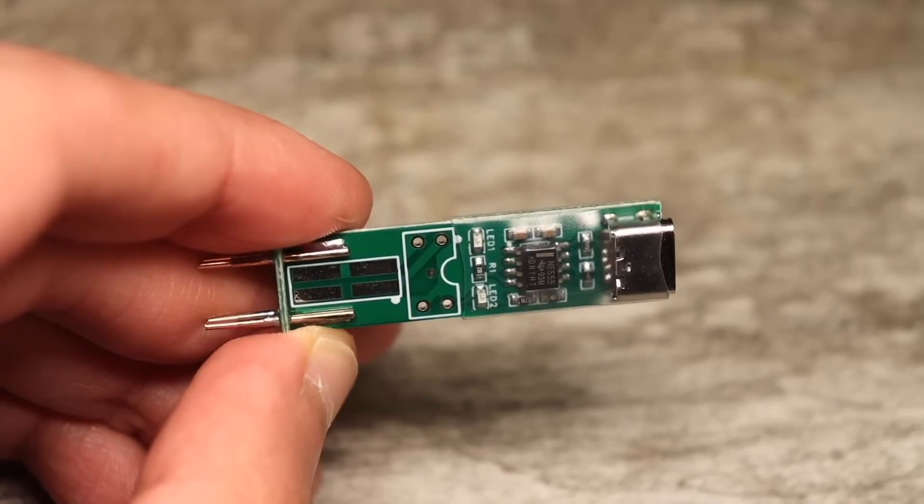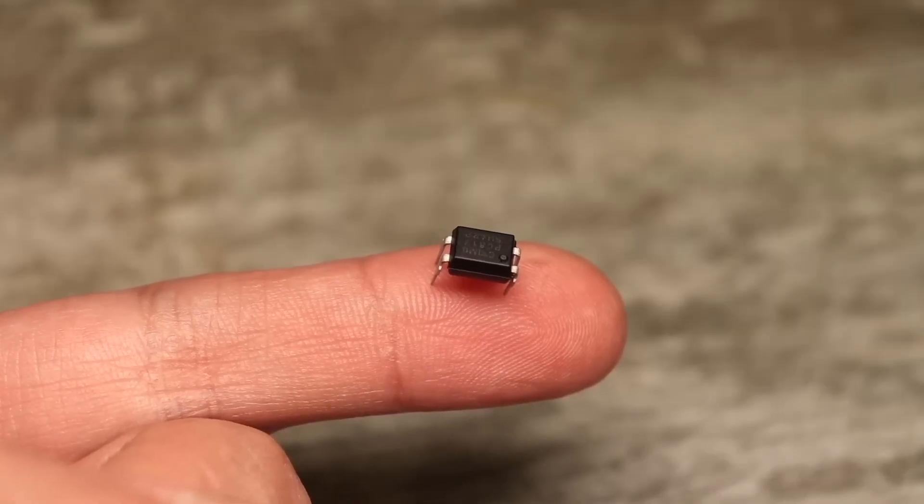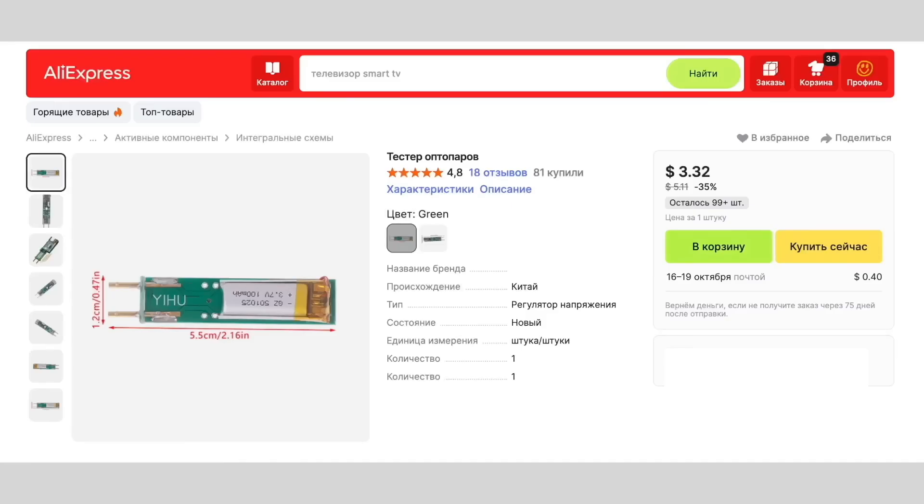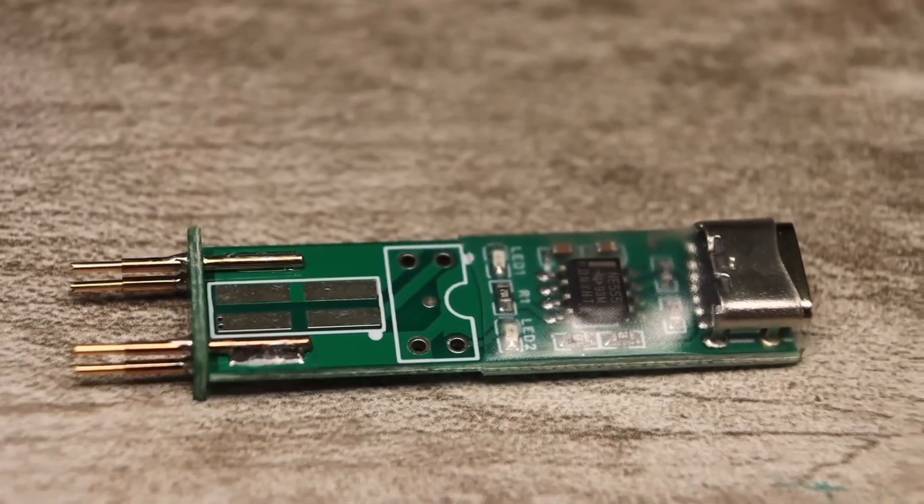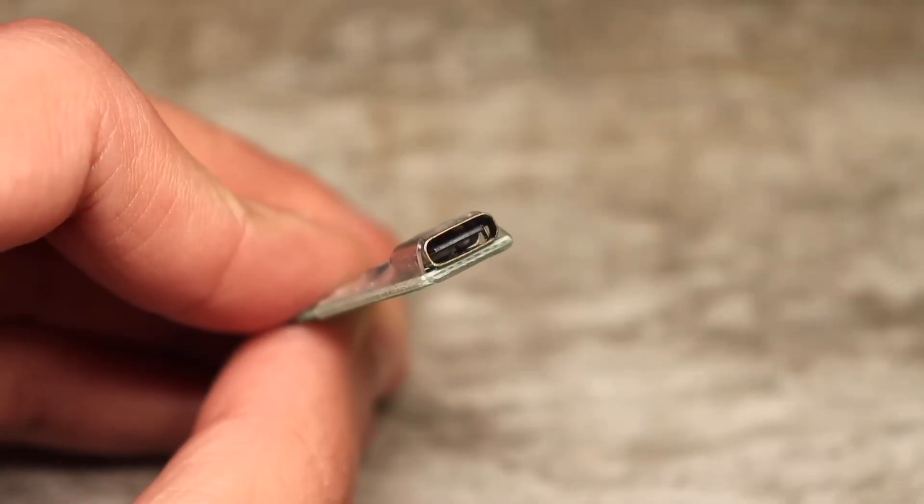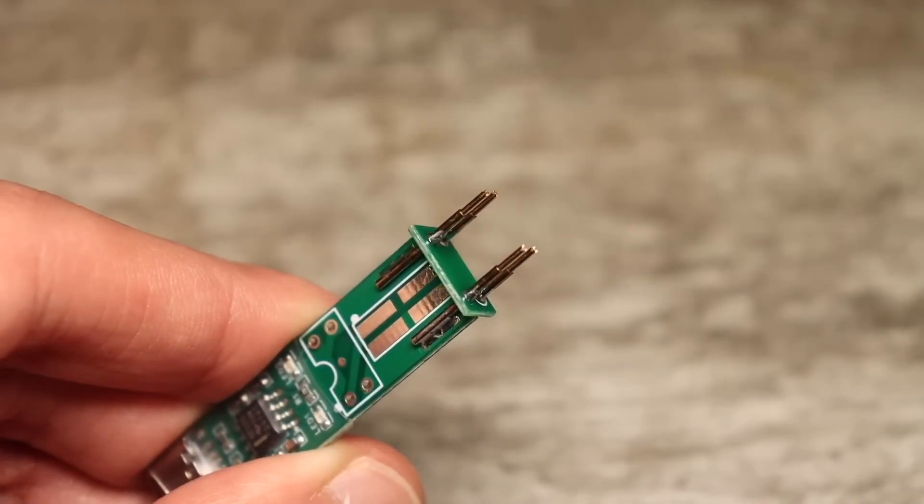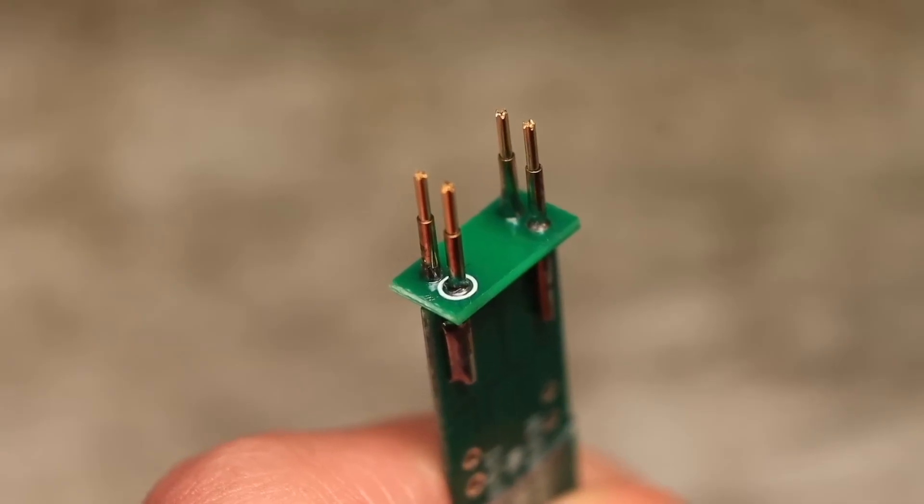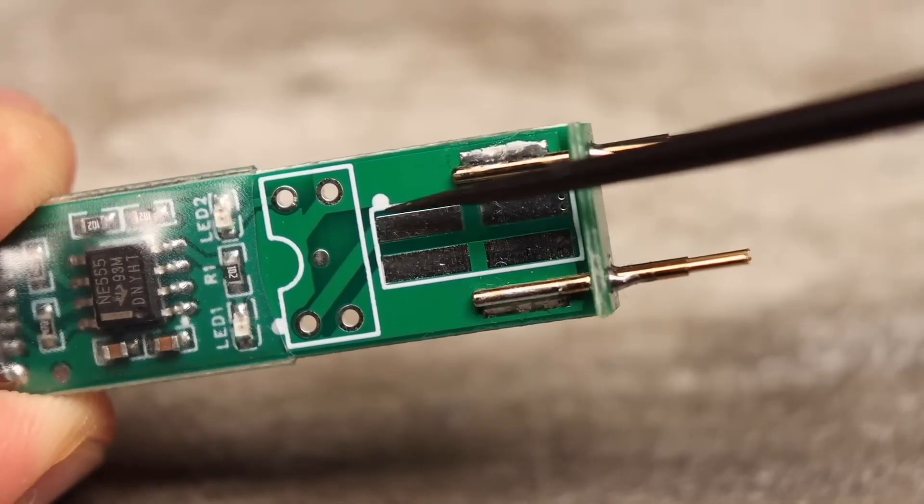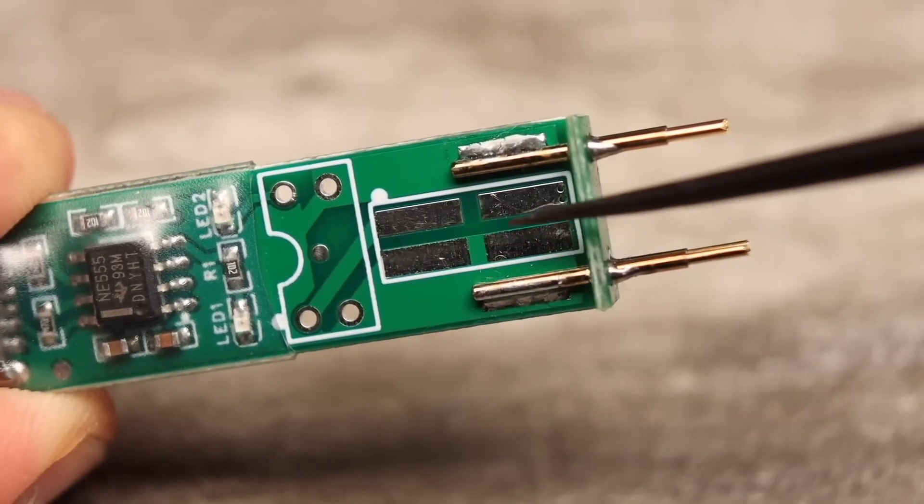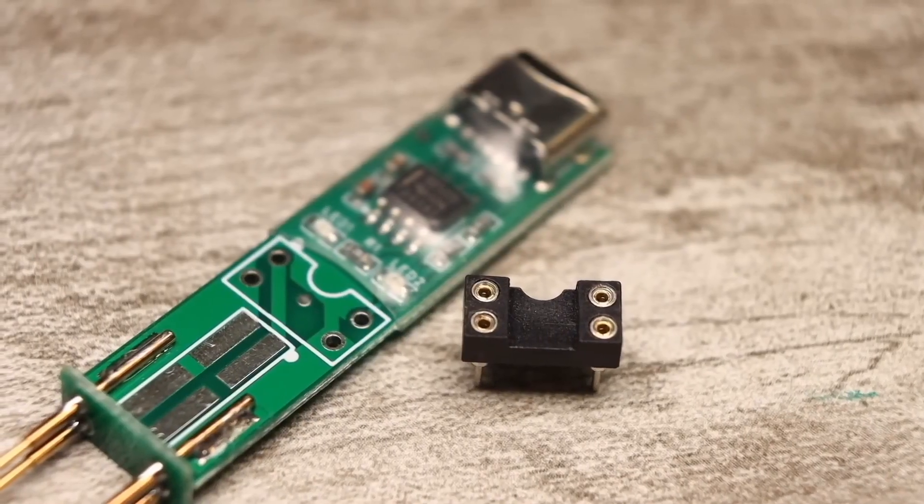The next simple tester lets you check standard optocouplers. There's a version of this board with a built-in battery, and another with external power via a Type-C port, like mine. The board is equipped with four spring-loaded contacts. The anode is labeled. You can quickly connect to the optocoupler and test it. There's also an extra slot for testing surface-mount optocouplers. And there's a dip socket as well.